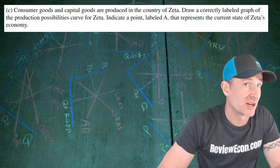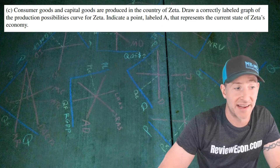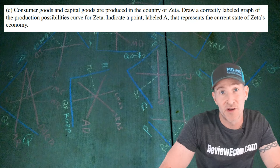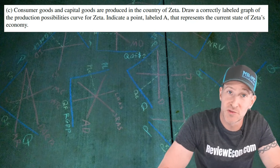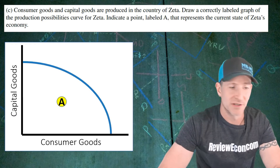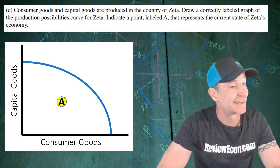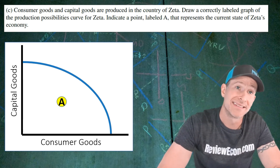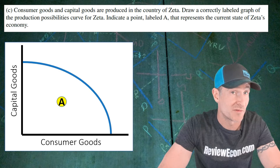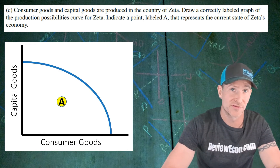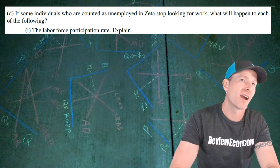For part C, we're going to draw a production possibilities curve for the country of Zeta. We're told they produce both consumer goods and capital goods, and once we've drawn the graph we place a point labeled A showing where Zeta is currently operating. Put consumer goods on one axis and capital goods on the other, draw a concave production possibilities curve, and since this economy is suffering from a recessionary gap, place point A within the curve. Any point inside the curve gets you that point.